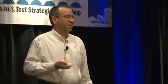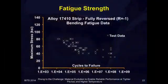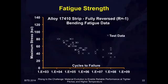So you load these up in the machines, you let them run, and you count the number of cycles it takes until the sample breaks. And then you plot those data points on what's called an SN curve, or number of cycles to failure versus stress level. And then you repeat this at different stress levels until you get a nice plot like this.